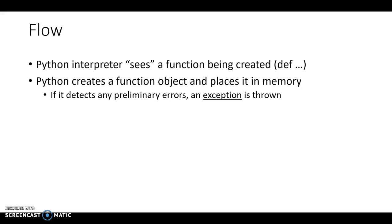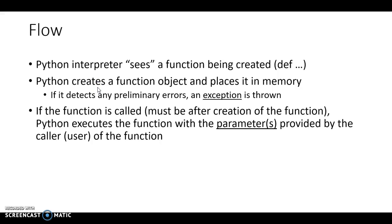Once the function is created and executed, the object is created. If it detects any preliminary errors, what's called an exception is thrown — an exception is sort of like an error. If there are other errors it can't detect, like errors with the inputs that come into it, it's not going to detect those. It does a quick check to make sure everything it expects is in place. And if you call the function before it's been created, Python looks in its memory and says 'I don't know anything about this function' and throws an error.